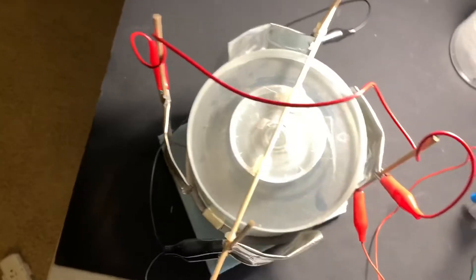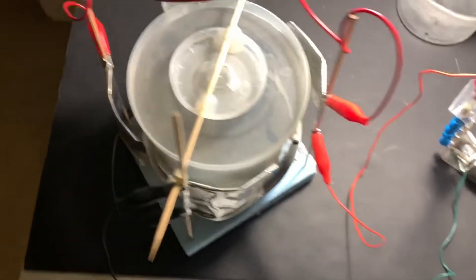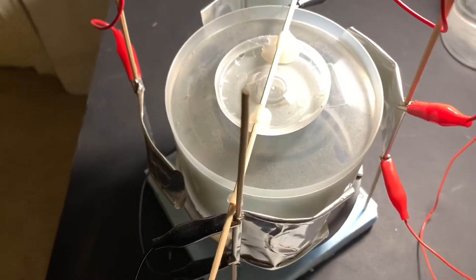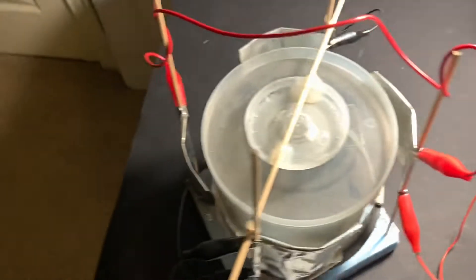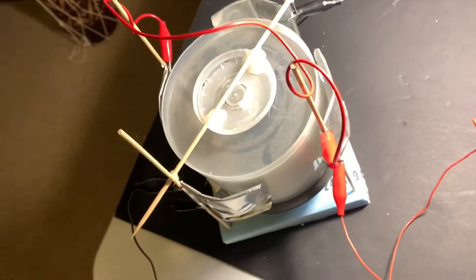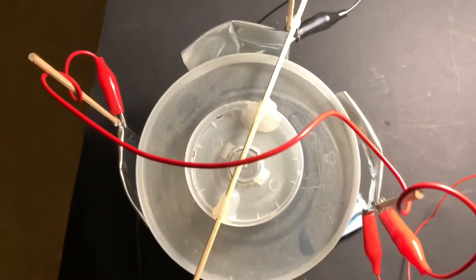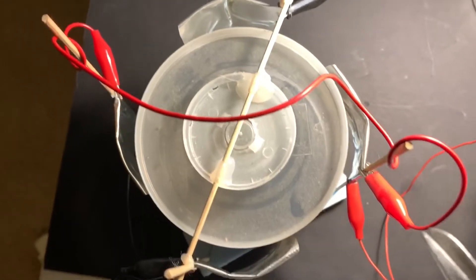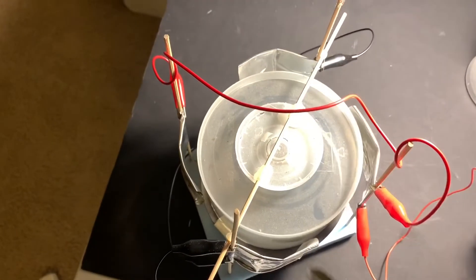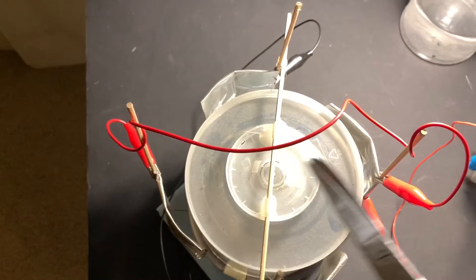Let's begin. A corona motor is an interesting device that uses static electricity from a DC power supply. I have a 20 kilovolt power supply here, and the contacts, which are made of aluminum foil, are arranged so these two here have negative and these two here have positive.